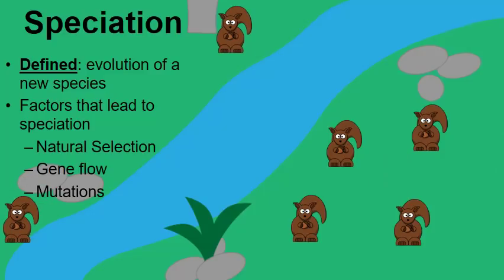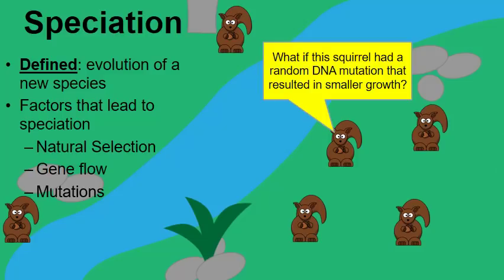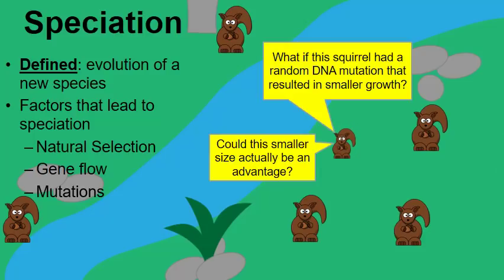DNA mutations are another factor. Every time organisms reproduce and cells multiply, there is the potential for error. What if a squirrel has a random DNA mutation resulting in smaller-than-normal growth? Could this smaller size actually be an advantage? Yes — maybe because it's smaller it can hide better amongst rocks and avoid eagles, and if it's not as large it doesn't need as much food and is less likely to starve. Not every DNA mutation is a fatal error.